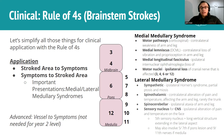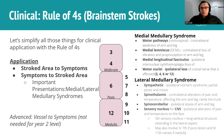Spinothalamic is going to have contralateral reduction in pain and temperature. Sympathetic and spinocerebellar will have ipsilateral effects because they're not crossing over. The main idea is: cranial nerve effects are ipsilateral with brainstem strokes, whereas DCML, corticospinal, and spinothalamic are all contralateral effects with brainstem strokes. Also important to remember is medially you have your motor pathways and the medial lemniscus, while spinothalamic is lateral and responsible for pain, therefore part of lateral medullary syndrome.